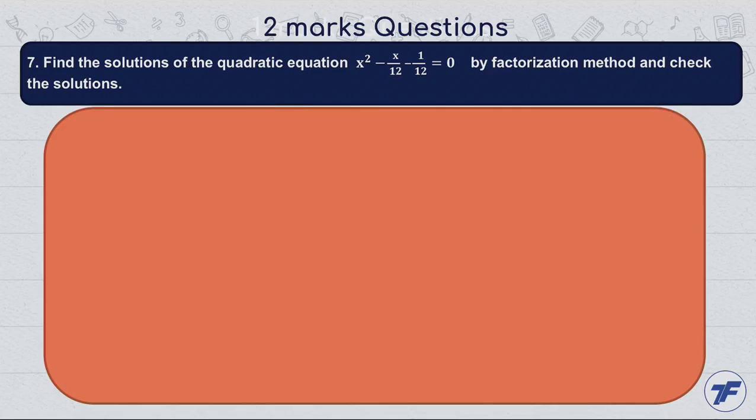Now the seventh question: find the solutions of the quadratic equation x² - x/12 - 1/12 = 0 by factorization method and check the solutions.